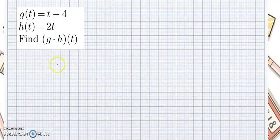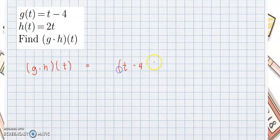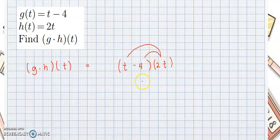Next example: we wanted to know g times h of t, which equals t minus 4, multiplied by 2t. Here this is a monomial multiplied by a binomial, so what you are going to do is just distribute. So 2t times t is 2t squared, then 2t times negative 4 is negative 8t. So here is the answer.